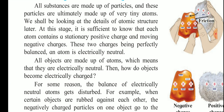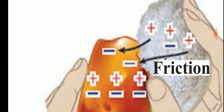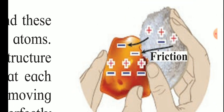How do objects become electrically charged? In the figure, two objects are rubbed against each other. Initially, the red object has three positive charges and three negative charges — they neutralize each other, so there is no net charge. Similarly, the gray object has three positive charges and one negative charge. When friction occurs between the two objects, two negative charges are seen shifting to the red object.